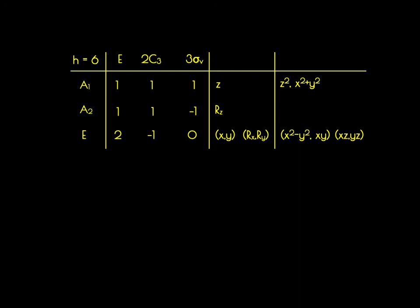We'll stop here with the construction of the C3V character table. If one wanted to, one could generate cubic functions using the same method just used for the binary functions — generating the 10 cubic functions and determining how they transform under the operations of the group. However, for our purposes, we only need the linear vectors, rotational vectors, and binary products. If we were dealing with f orbitals, then we would need the cubic functions, because f orbitals transform as cubic functions.